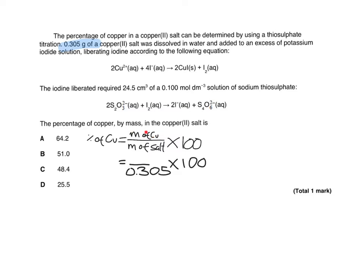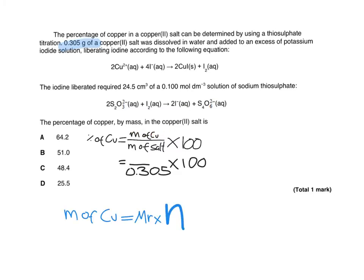Let's write an equation for that. The only equation you know with mass in it is mass equals Mr times moles. So mass of copper equals Mr times moles. We know the Mr, so let's put it in. The Mr, or in this case actually Ar, of copper is just read from the periodic table. So we've got the Ar of copper, which is 63.5, times N. So we need to find N, that's the moles of copper.